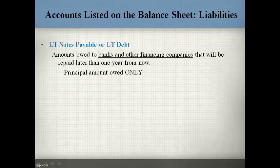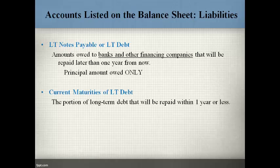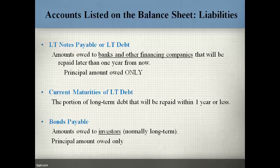Long-term notes payable, also called long-term debt, represents amounts owed to banks or other financing companies that will be repaid sometime after one year. Interest is not included in the notes payable amount. The portion of long-term notes payable that must be repaid within one year is reported separately as a current liability, often called current maturities of long-term debt or current portion of long-term debt. Debt repaid in periodic payments such as monthly or quarterly has a part repaid within the year and a portion paid after one year. Bonds payable represents amounts owed to investors and are normally long-term.